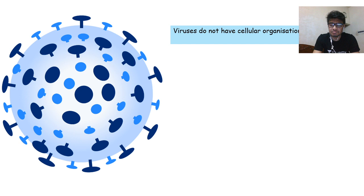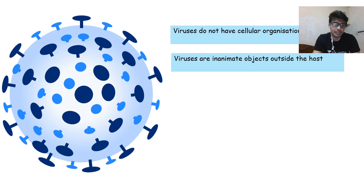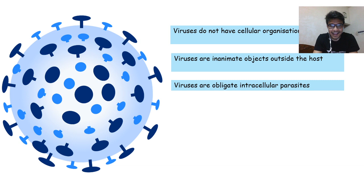This is a virus — though it looks really big, its scale is in the order of nanometers. Viruses have no cellular organization. Though it looks like a spherical blob, it doesn't have any cell organelles or subcellular locations. They are inanimate objects outside the host, but inside the host they're reproducing and replicating their genetic materials, amplifying their numbers — pretty much like zombies.